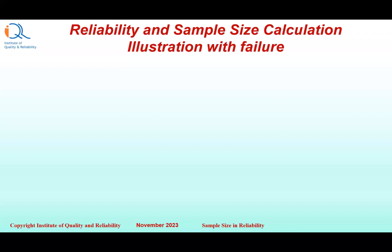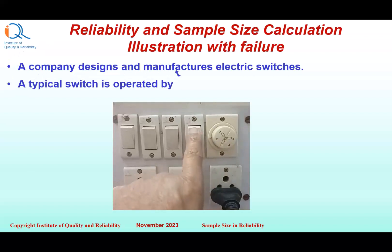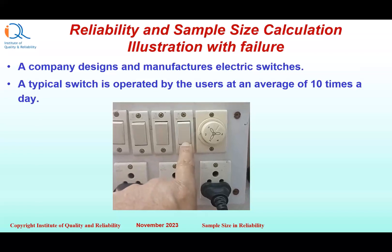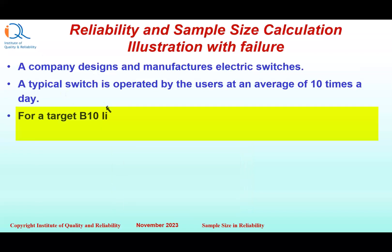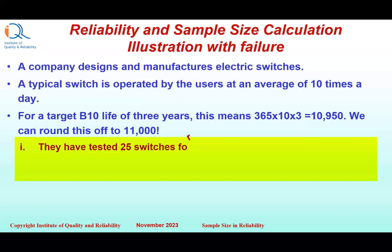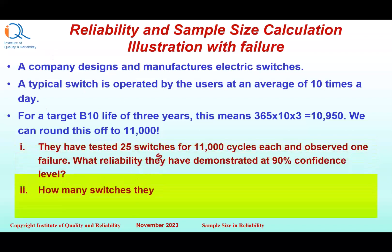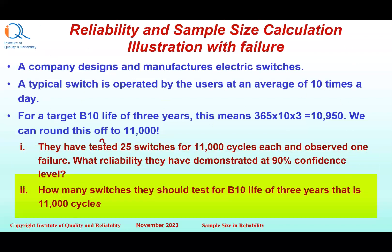We will now explain the reliability and sample size calculation procedure with an illustration. A company designs and manufactures electric switches. A typical switch is operated by users at an average of 10 times a day. For a target B10 life of 3 years, this works out to 365 times 10 times 3, that is 10,950 cycles, which we round up to 11,000 cycles. Question 1: They have tested 25 switches for 11,000 cycles each and observed one failure — what reliability have they demonstrated at 90% confidence level? Question 2: How many switches should they test for demonstration of B10 life of 3 years, that is 11,000 cycles?